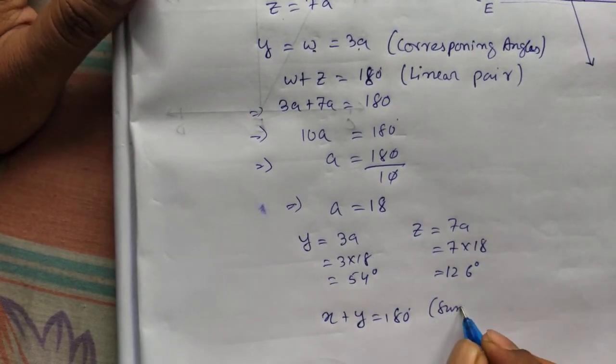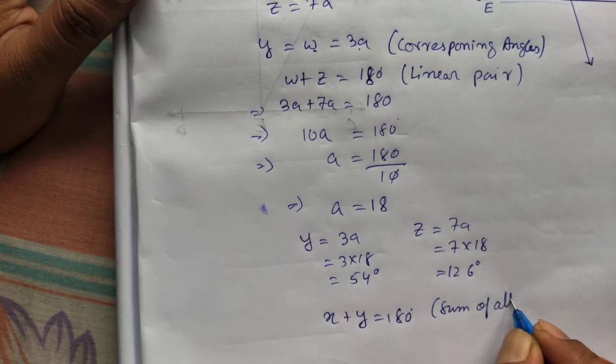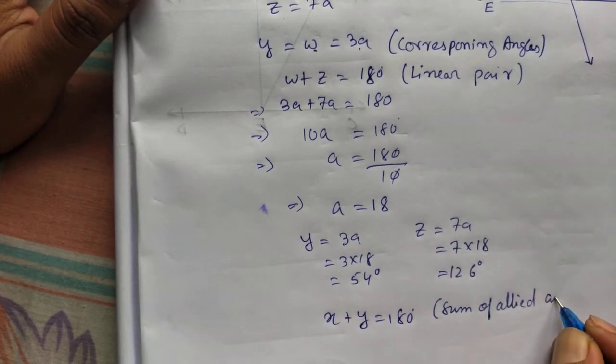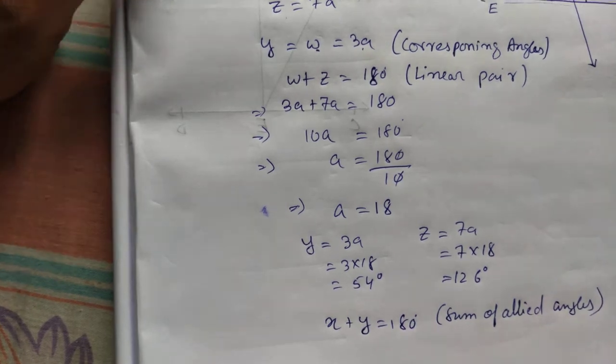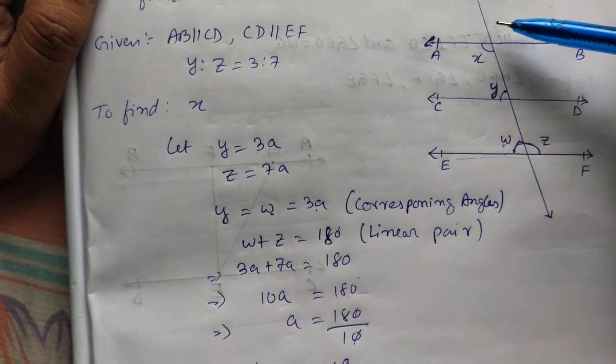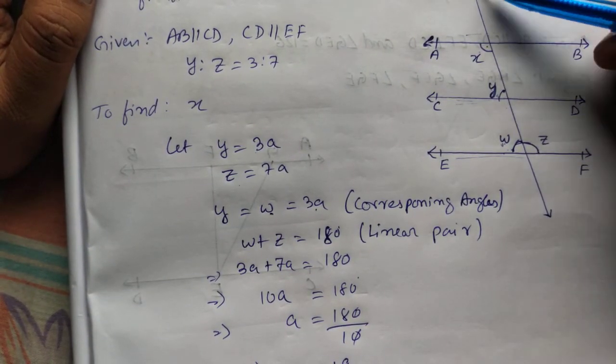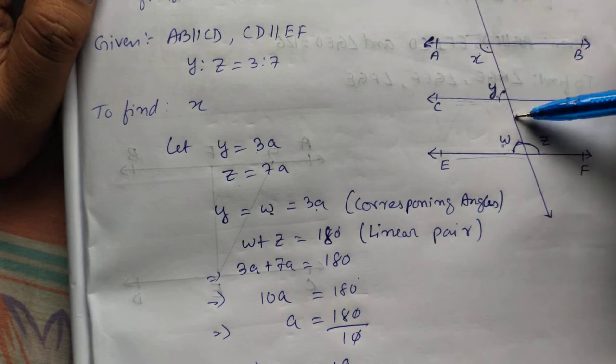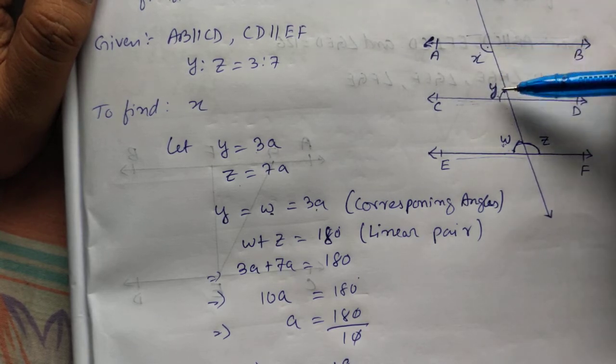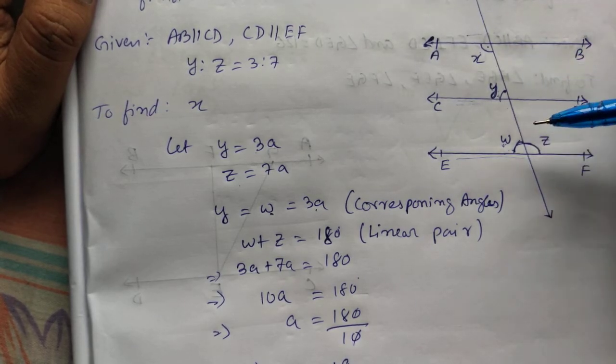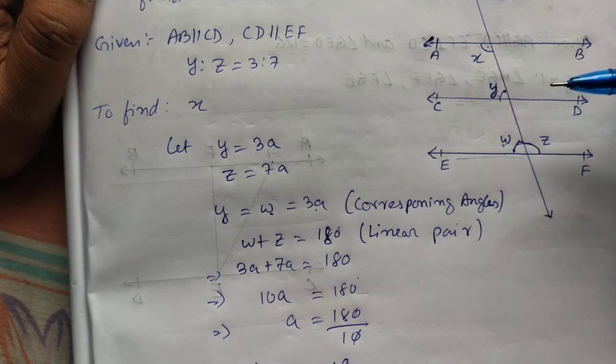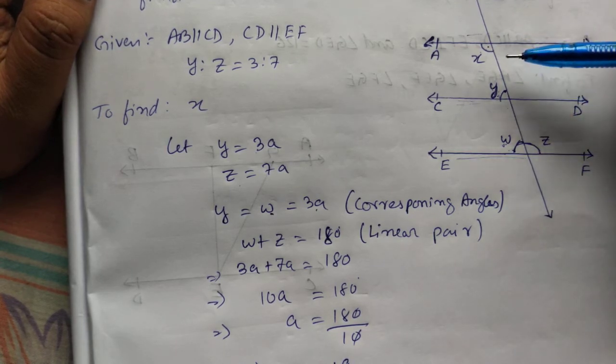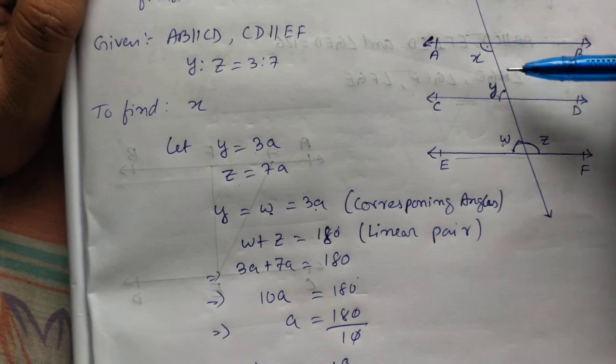This we call it sum of angles. If interior angle on the same side. This is an interior angle on the same side of the transversal line. If I sum this, it will be always 180. If you are not clear, go through the introduction video of exercise 6.2.